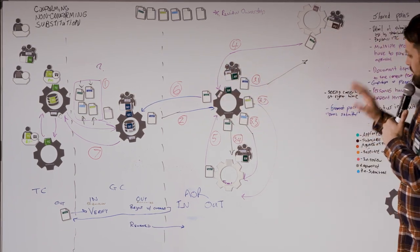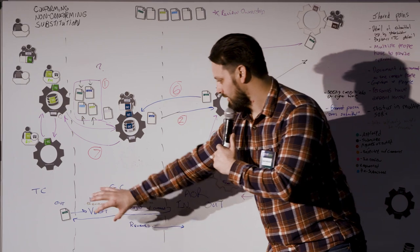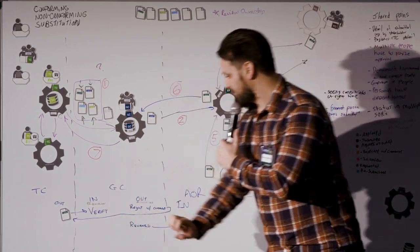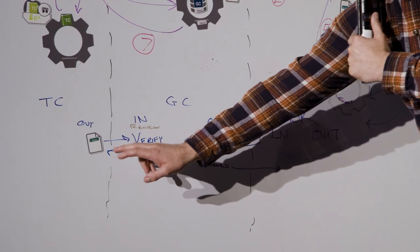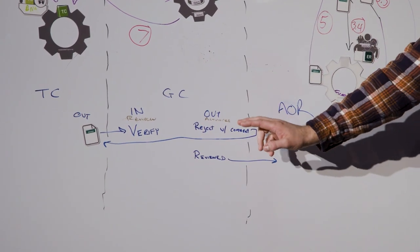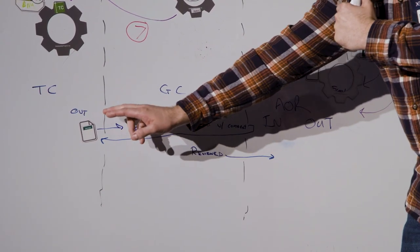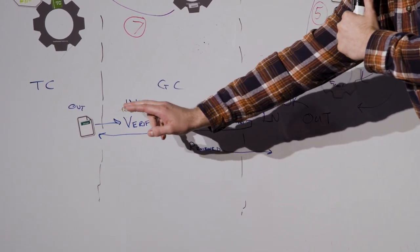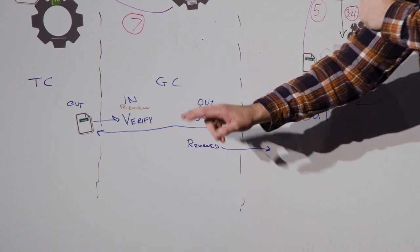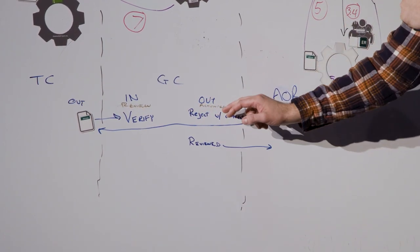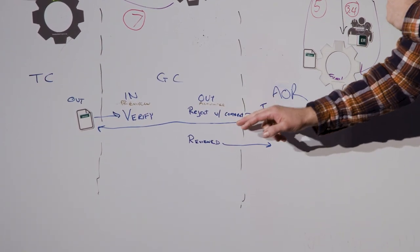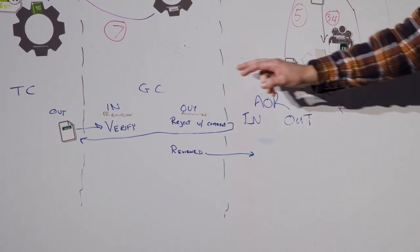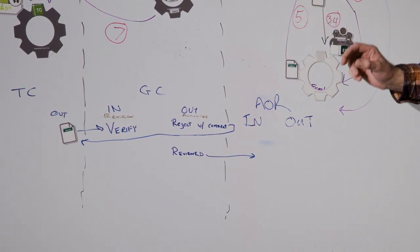What we came down to is each section or area has an outbox and an inbox. Going from the trade contractor to the GC, you have the outbox to send the submittal package over. The GC gets it, reviews it, and then sends it out for review to the architect of record — so there's an in and an out for each piece.